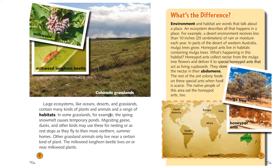In some grasslands, for example, like the Colorado grasslands, the spring snowmelt causes temporary ponds. Migrating geese, ducks, and other birds may use these for nesting or as rest stops as they fly to their more northern summer homes. Other grassland animals only live near a certain kind of plant. The milkweed longhorn beetle lives on or near milkweed plants — it likes to eat the milkweed plants, so it makes sense it would live near them.